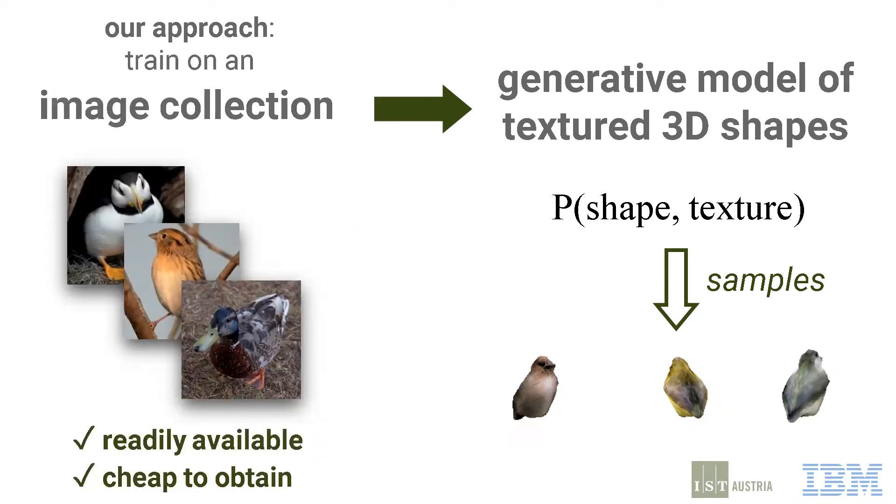Instead, we propose to learn our generative model from unstructured collections of images. In particular, we don't require multiple views per instance, we don't require any 3D annotations, and we don't require ground truth segmentation masks.